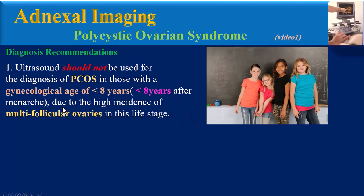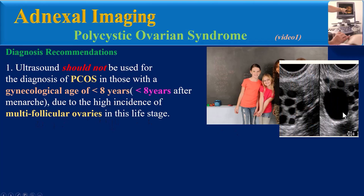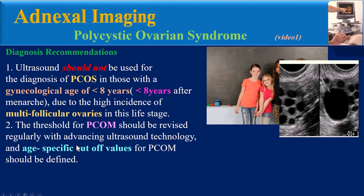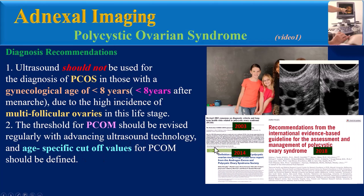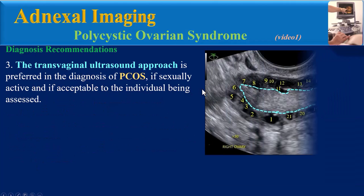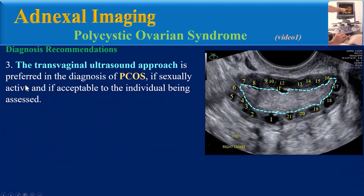The 2018 consensus also presents diagnosis recommendations. First, ultrasound should not be used for the diagnosis of PCOS in those with a gynecological age of less than eight years — meaning less than eight years after menarche — due to the high incidence of multi-follicular ovaries at this life stage. The threshold for PCO morphology should be revised regularly with advancing ultrasound technology, and age-specific cutoff values should be defined.